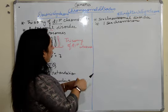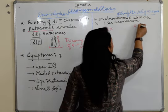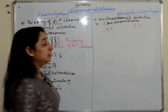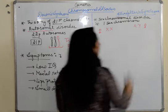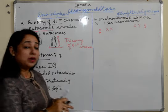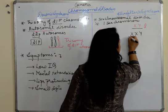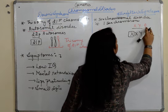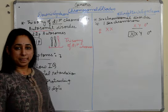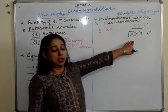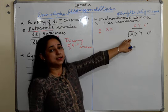We all know that females have XX chromosomes and males have XY chromosomes. In Klinefelter syndrome, the male is going to have an extra X chromosome — so the genotype is XXY. This extra X chromosome is the condition which leads to Klinefelter syndrome.